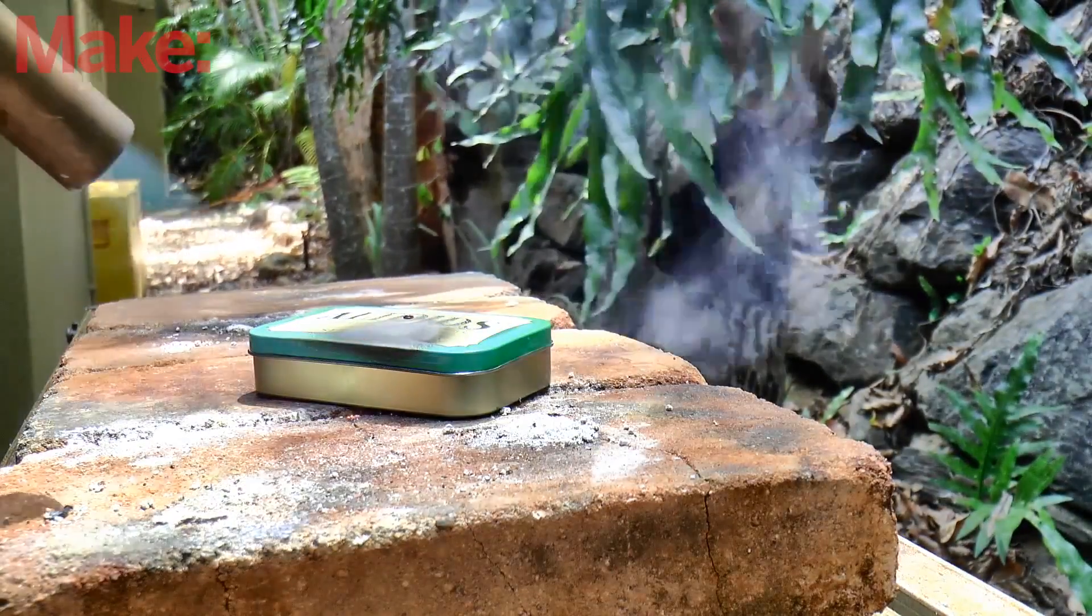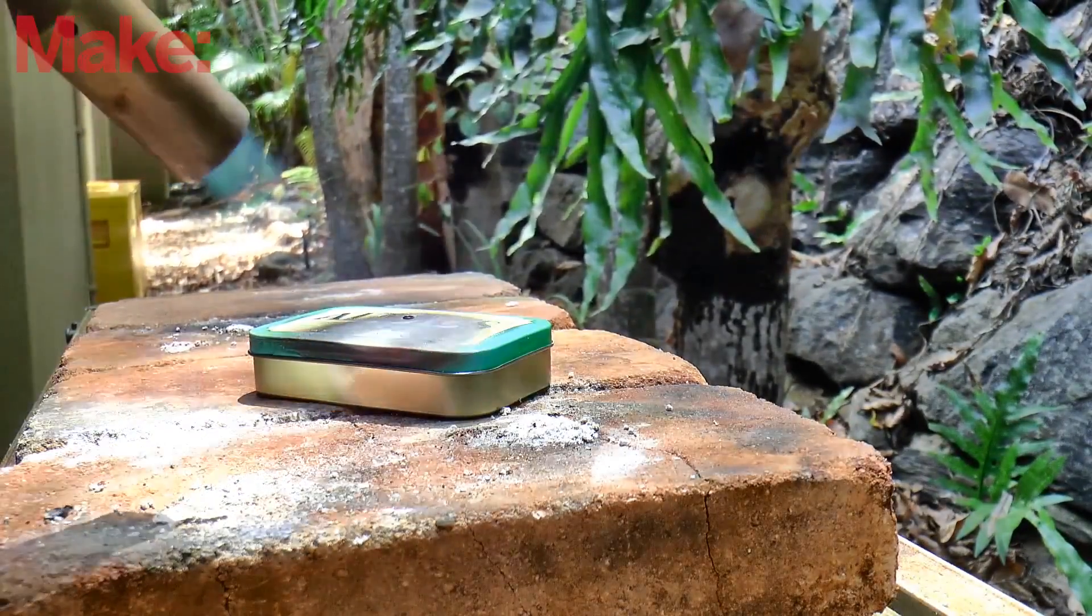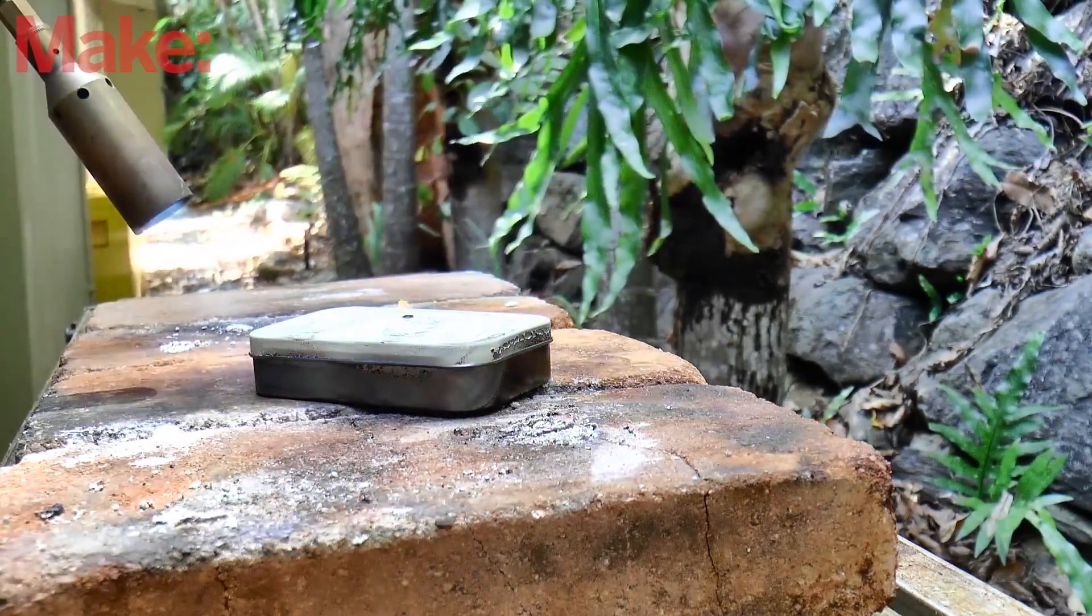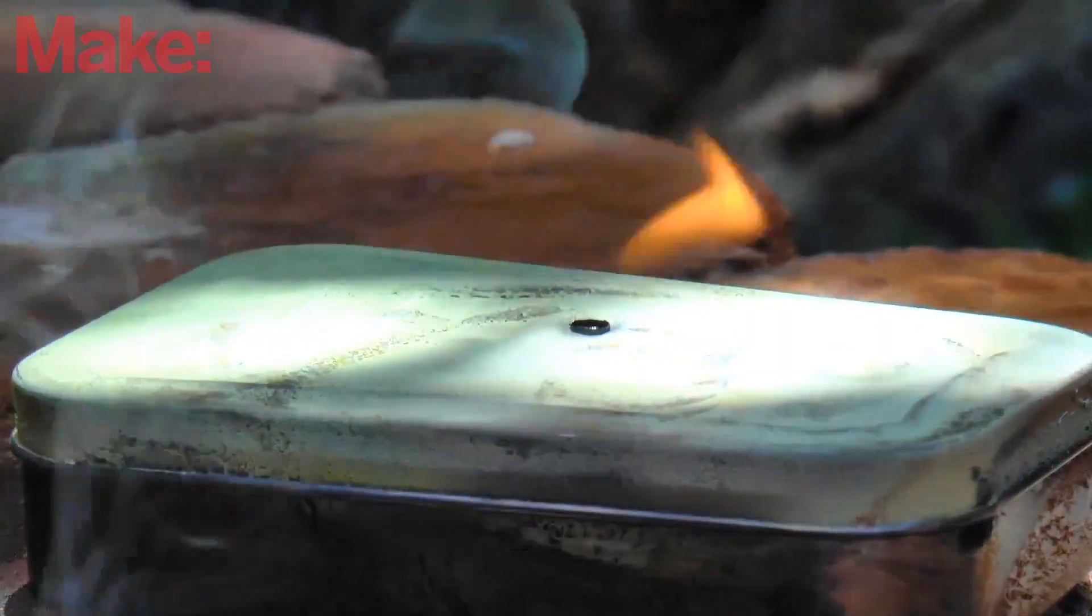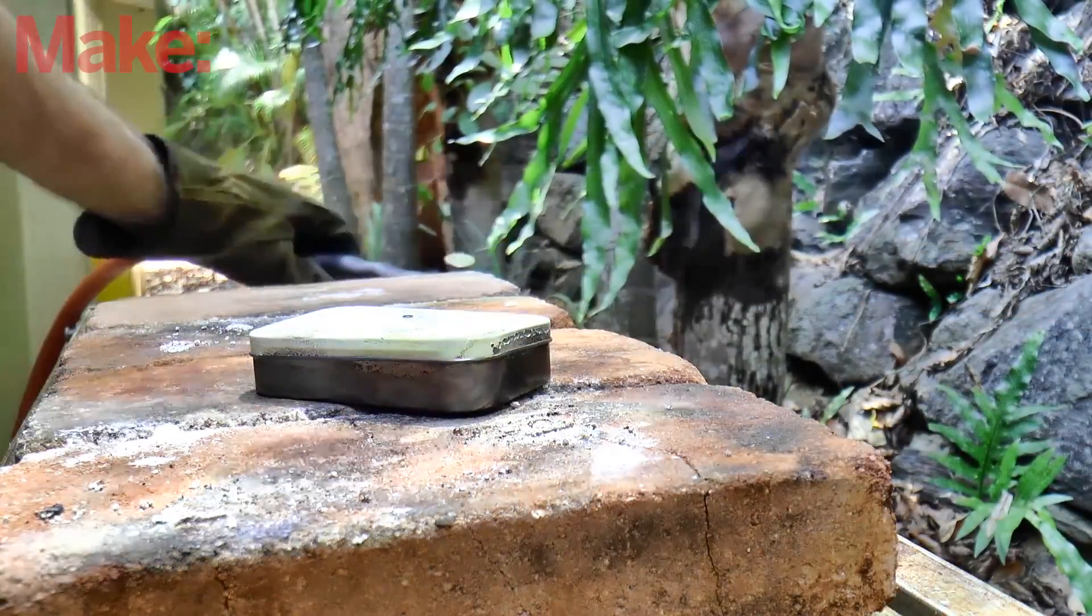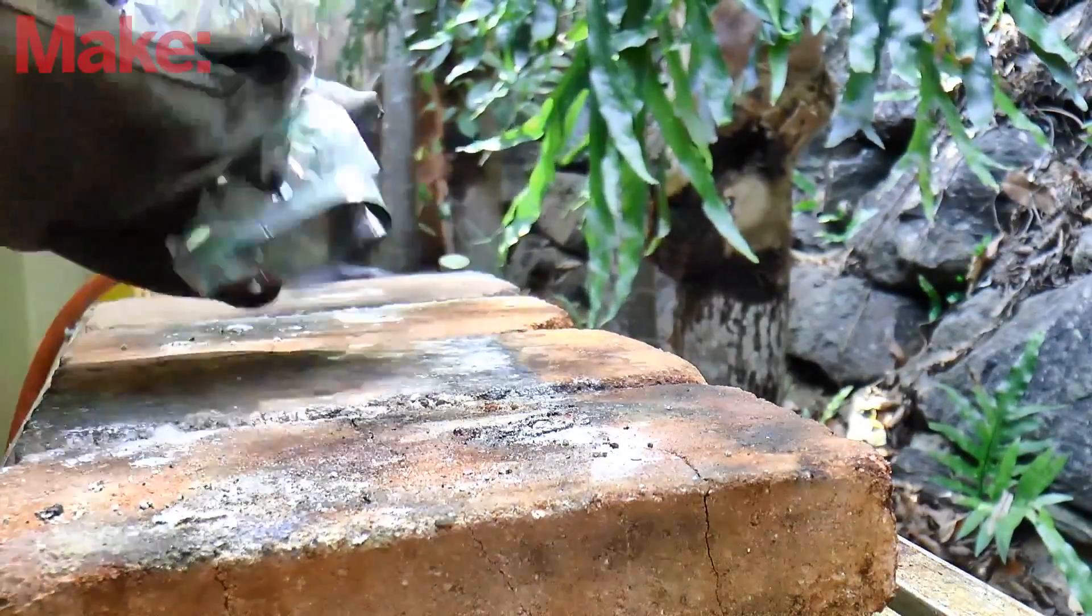Somewhere safe outdoors, heat up the tin. This little propane torch is perfect for the job, but a camping stove or a BBQ would work just as well. After the paint burns off, you'll see a little flame coming from the top and perhaps the sides of the tin. After a few minutes, this flame extinguishes, at which point remove the heat.